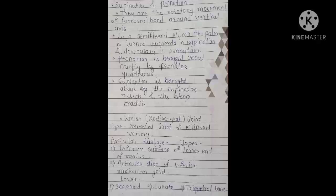Supination and pronation are rotatory movements of the forearm and hand around the vertical axis. In a semi-flexed elbow, the palm turns upward in supination and downward in pronation. Pronation is brought about chiefly by the pronator quadratus muscle, and supination by the supinator muscle and biceps brachii.